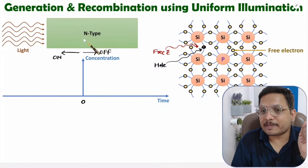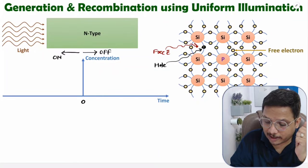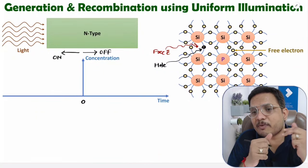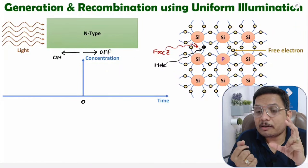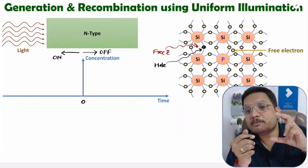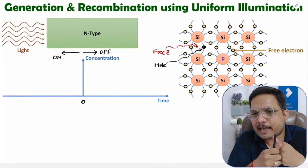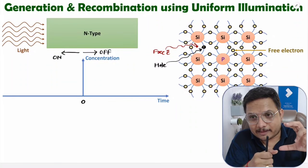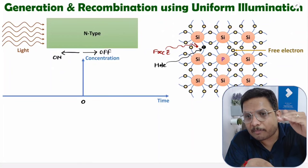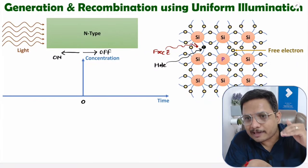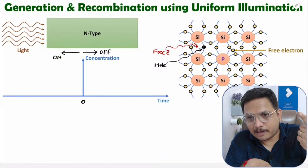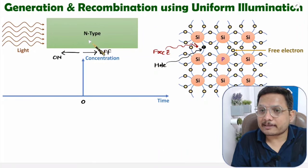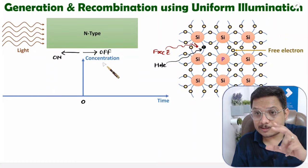Here I am taking the example of an n-type semiconductor material. In n-type, free electrons are already present, so majority carriers are electrons. Since electrons are the majority carrier, the percentage variation in electron concentration will be very small. So we focus on minority carriers only — in n-type, minority carriers are holes — and we focus on the concentration change for holes.